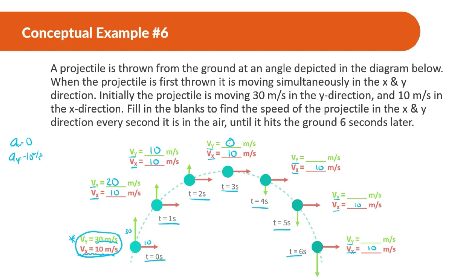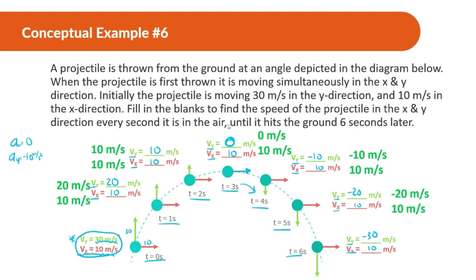Notice at the very top, the velocity in the Y direction is zero; there's still velocity in X, but Y is zero. The next second, we add negative 10, so it becomes negative 10 and so on. Looking at the answers, if we split it down the middle, they are the same speeds — some negative and some positive. At the start it's 30 and 10; at the corresponding point on the way down it's also 30 and 10. It has that symmetry.